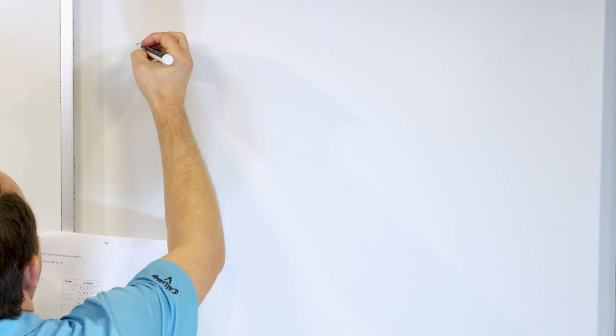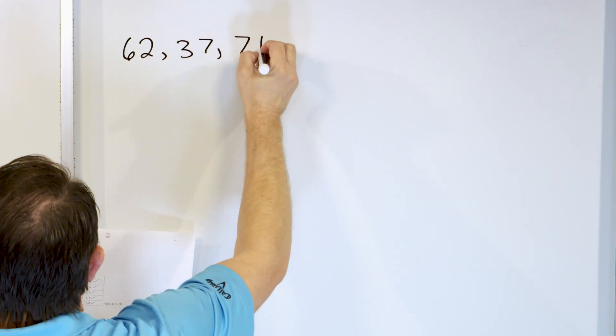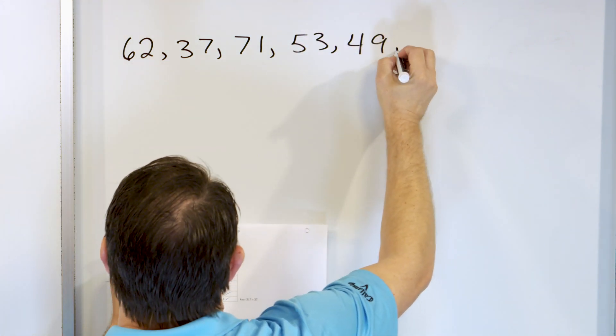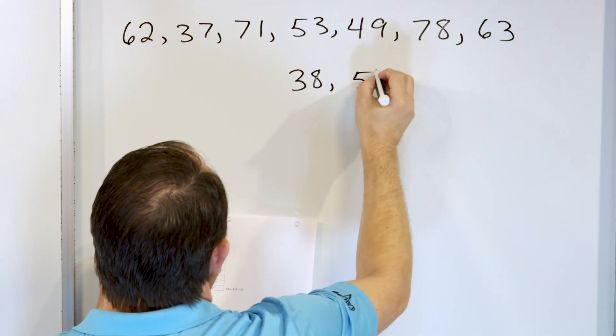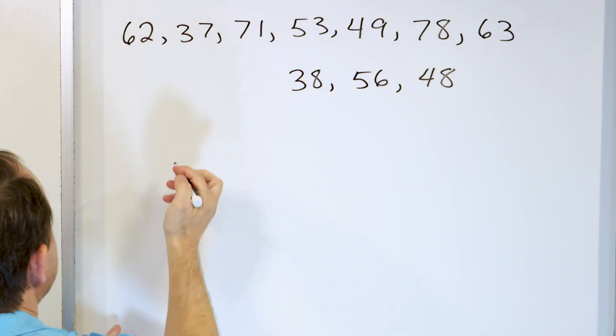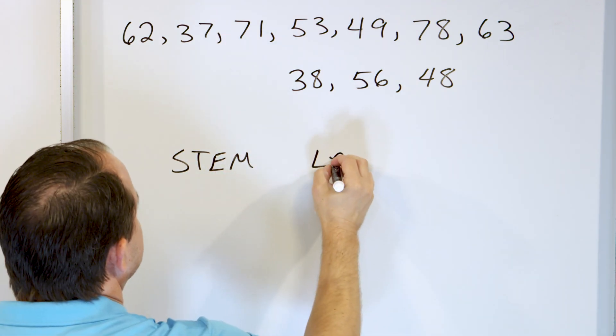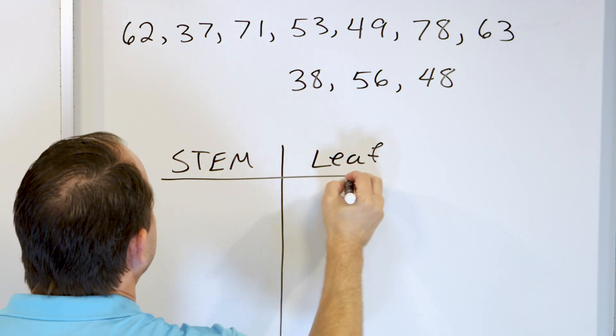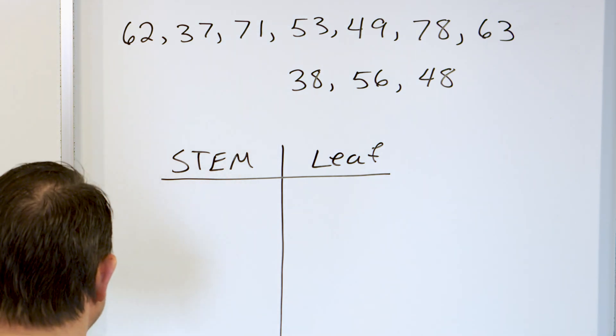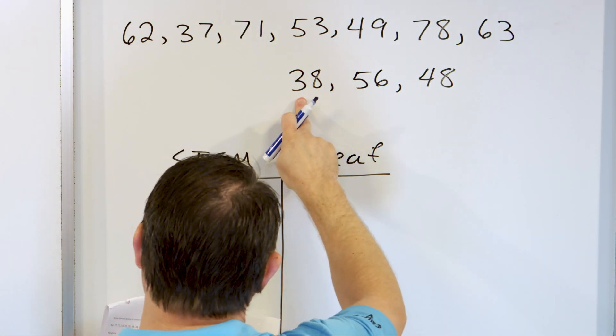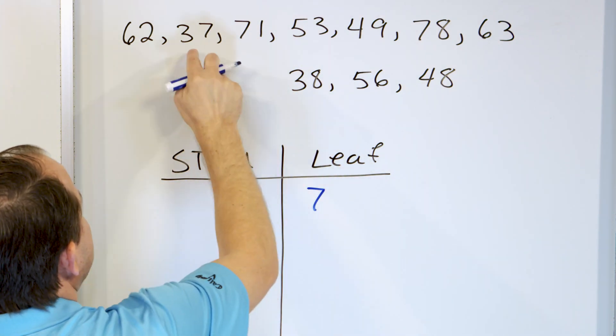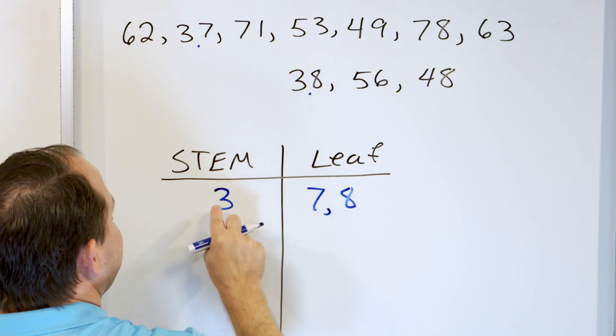Let's take a look at the next problem. Here is our data set. We have 62, we have 37, 71, 53, 49, 78, 63, and then 38, 56, and 48. So it's going to be easier if you just try to do these in order. Stem, make a little table here, leaf. Try to go in order if you can. Sometimes it's a little hard to do when you have a lot of data points and you might go out of order a little bit. But try to look at something in the teens. There's nothing here. Try to look for something in the 20s. There's nothing here in the 20s. Then you try to look for something in the 30s. So we have a 37, a 38. So the stem is a 3 and the leaf is 7, so that's 37. We have 38, so we have to put an 8 here, 37, 38.